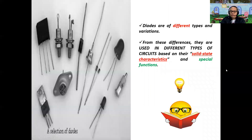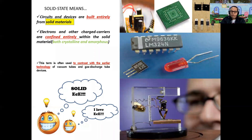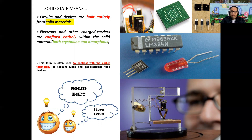Diodes have different types and variations, and are used in different circuits based on their solid state characteristics and special functions. Solid state means circuits and devices are built entirely from solid materials — that is why we use the term solid state electronics. Electrons and other charge carriers are confined entirely within the solid material.